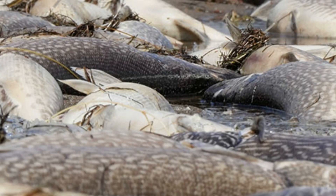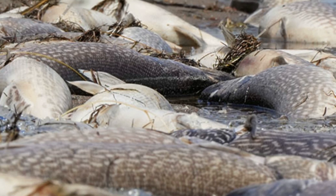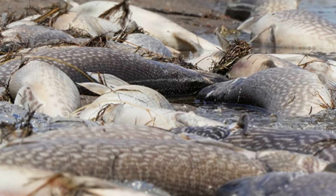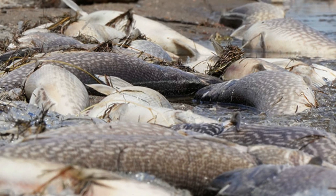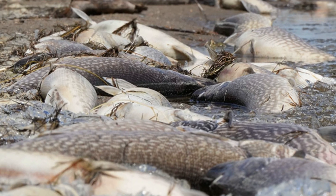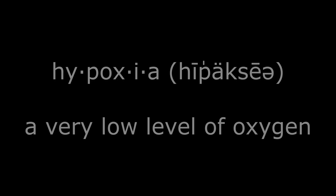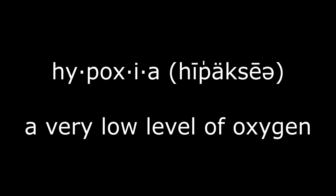Winter kill is the death of a large amount of fish at one time due to a condition known as hypoxia. Hypoxia is simply defined as a very low level of oxygen, but what is it about winter that makes this condition much more likely to happen?